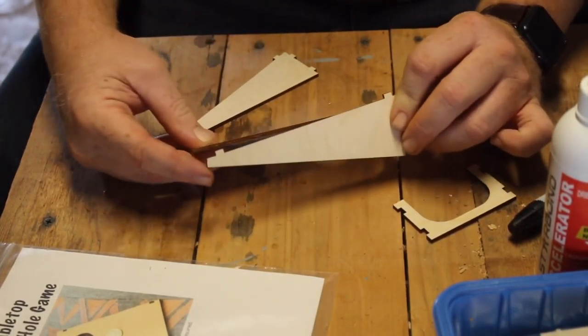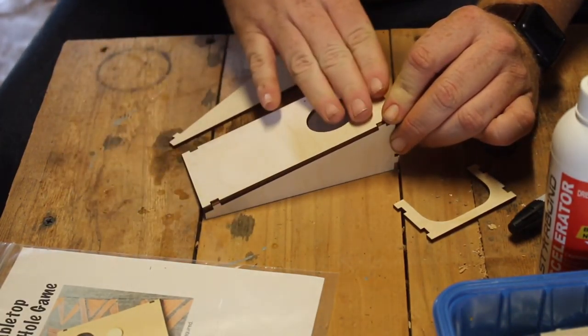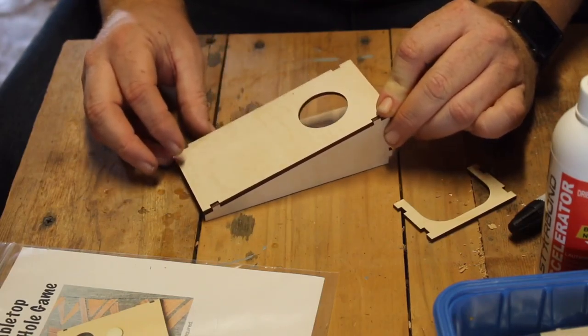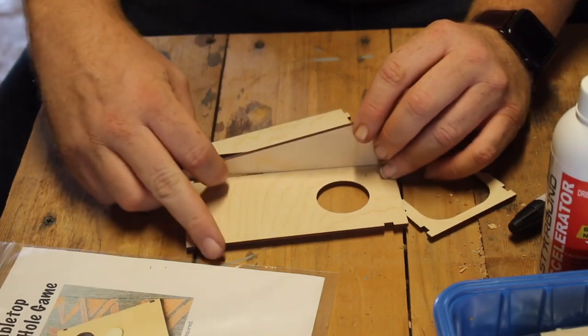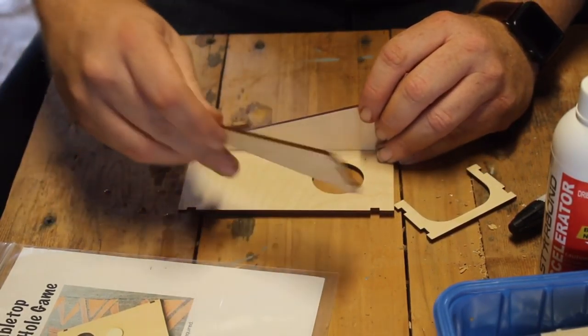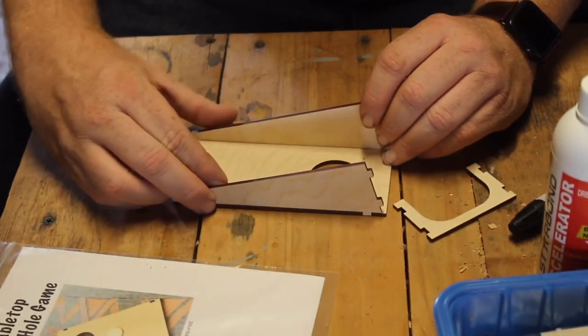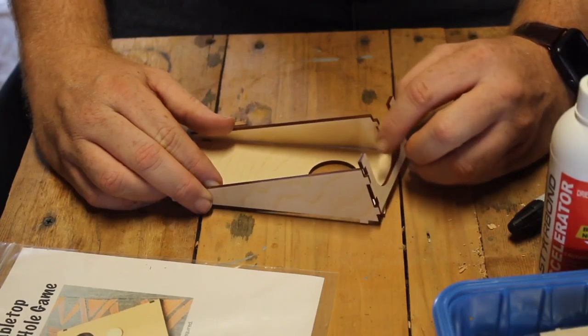We're going to set it down and the raised part goes towards the hole so it slopes upward. And put the other piece in. Now, the fit on this one is not as tight as some of the other projects and that's why we're going to glue this one.